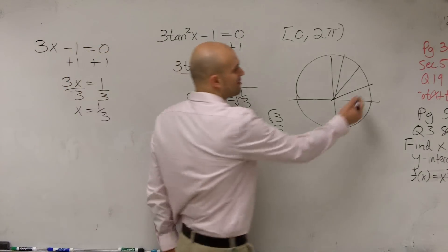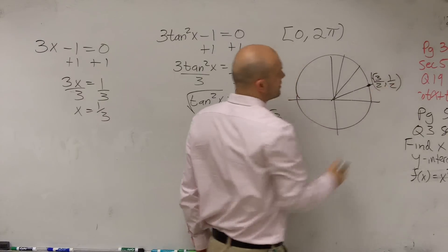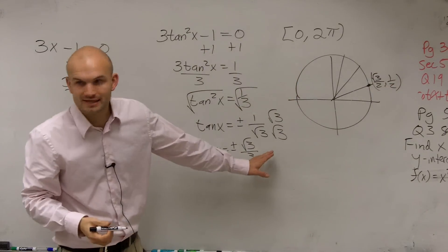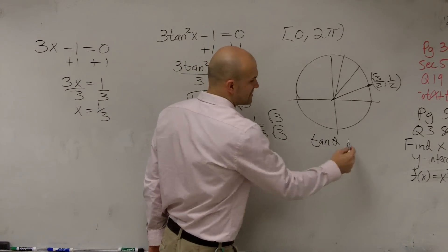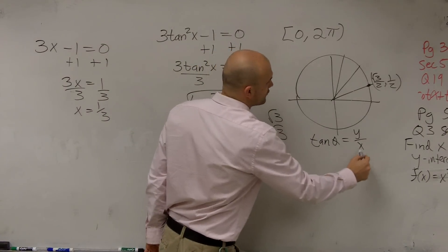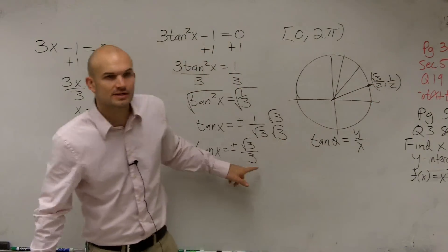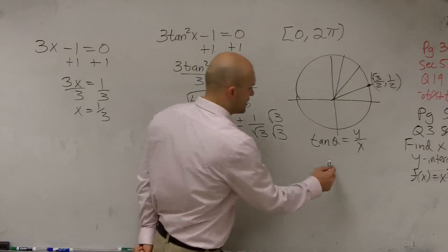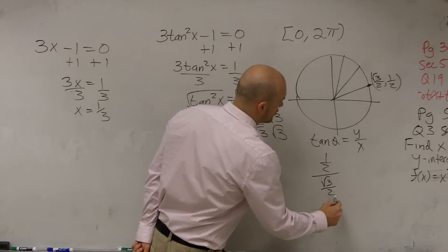So we have our first point, which remember is square root of 3 over 2 comma 1 half. Well, remember tangent of theta for any angle is represented by the y over the x. So if I do y over x, is that going to give me square root of 3 over 3? I don't know. Let's check it out. 1 half divided by square root of 3 over 2.